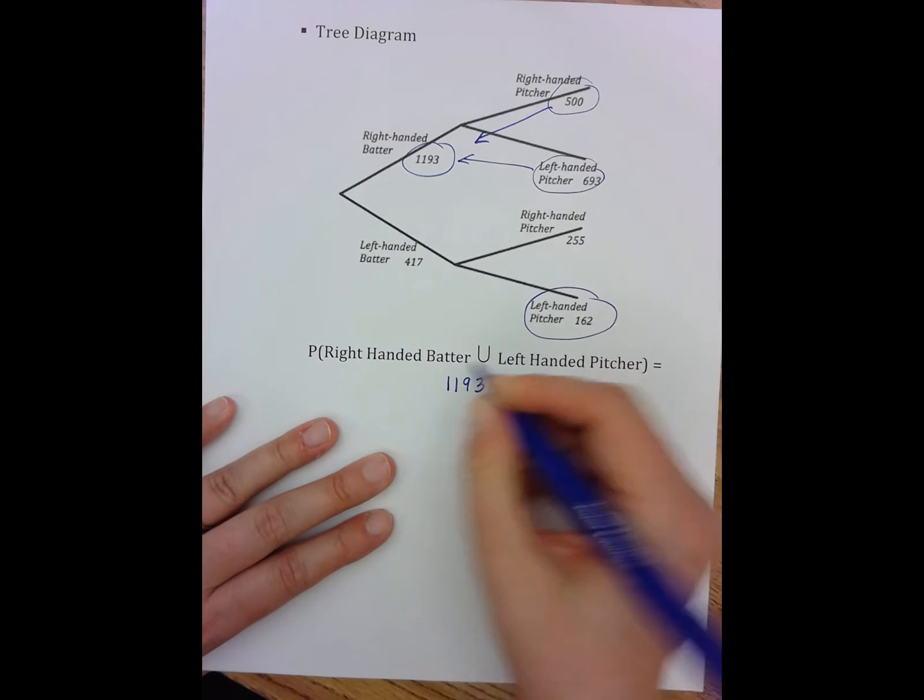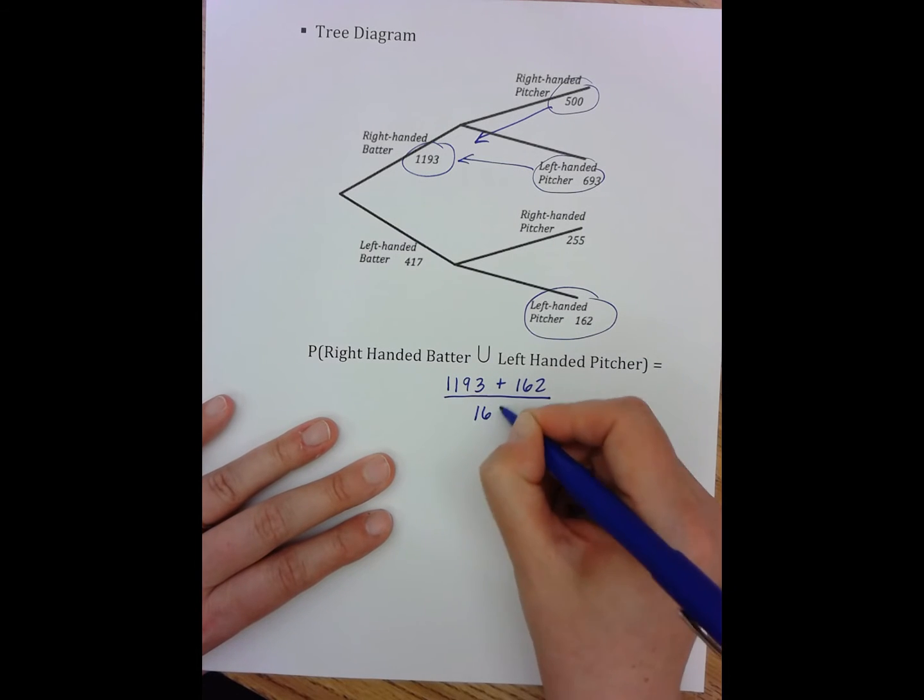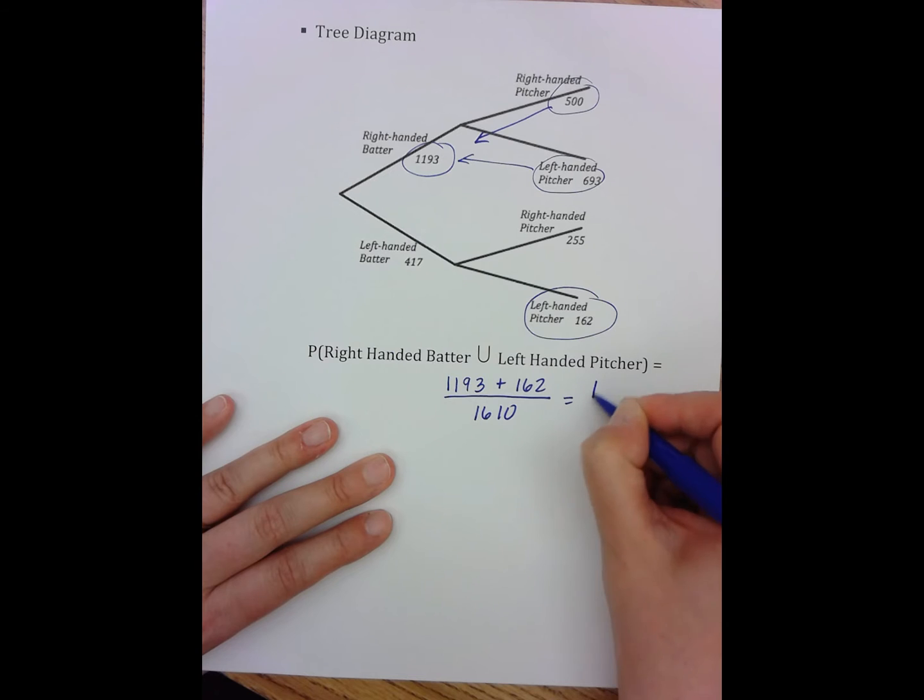So now I have plus 162 over the total, which is 1610, which is 1355 over 1610, which is approximately 84%.